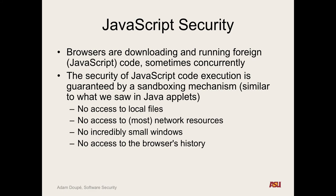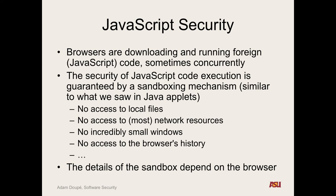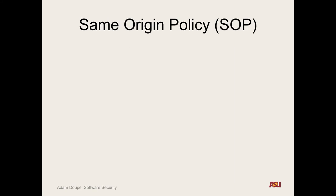Think about if every website sent JavaScript code to query every single site you've ever visited — they could learn a lot about you. The specific details of every sandbox depend on the browser but they all do most of these things. If there's only one thing you take away from this section of the class on web security, it needs to be the same origin policy. The same origin policy is the absolute most important thing to web security.